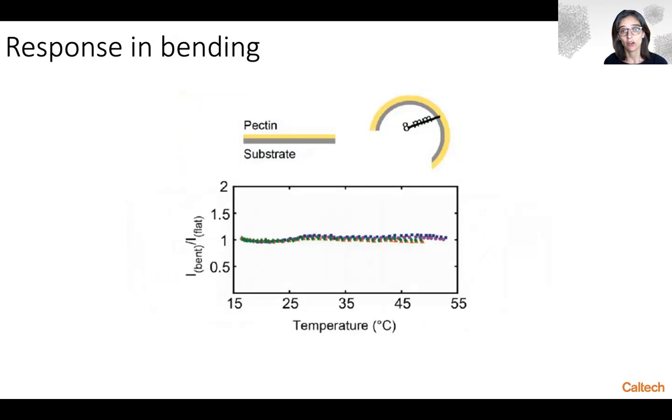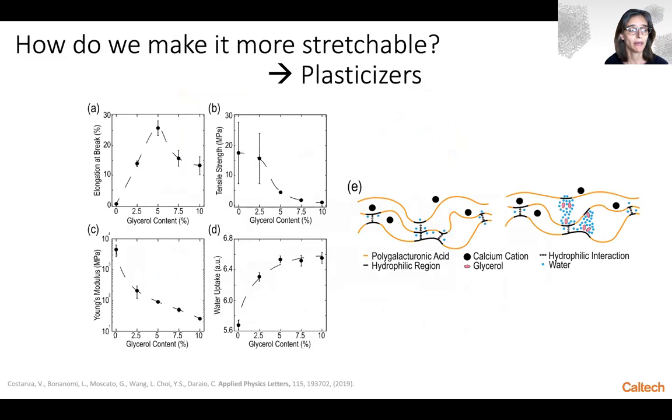However, it's not very stretchable. We have thought of pectin as being a useful organic compound that could be used, for example, in wearable devices to monitor temperature on the skin or to develop wearable thermometers. However, for fulfilling such applications we need to make it more stretchable. In the past we have explored the use of plasticizers such as glycerol to enhance the stretchability and the elongation at break of these systems.